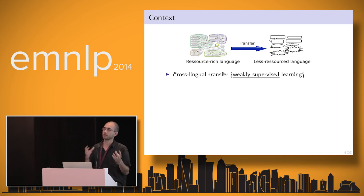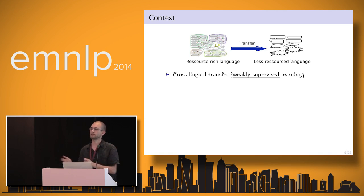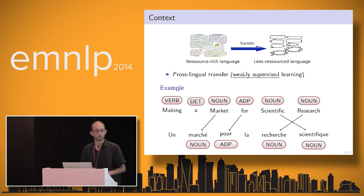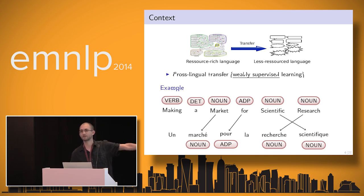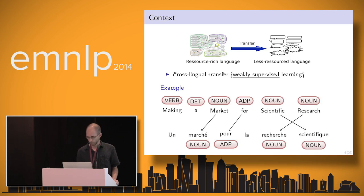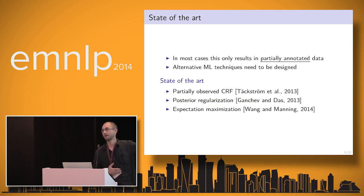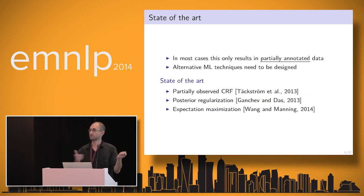We have a resource-rich language where we have the annotation, we use this annotation, and we try to transfer it into other languages. For part-of-speech, we have English with annotations, and a low-resource language — here it's French — and we can project the tags. The problem is that usually you only have partial labels on the target side, and they're very noisy because the transfers are not of good quality in many cases.